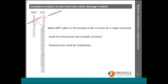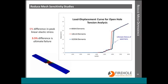Next I have two examples of the reduction in mesh dependence provided by Helios MCT. Here I have an open hole tension specimen with three different mesh densities ranging from 8,000 elements to 32,000 elements. The peak linear elastic stress difference between the coarse mesh and the fine mesh is five percent. But as you can see from the load displacement curve, where the curve goes vertical for each specimen, that signifies ultimate failure. The difference in ultimate failure between the three specimens is only three and a half percent.